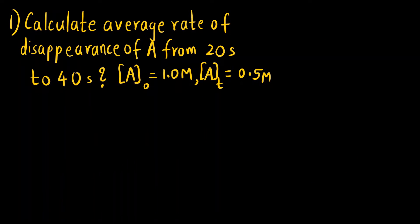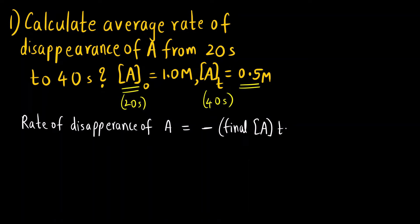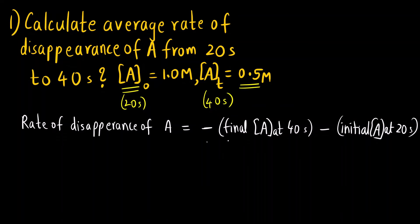Let us understand this with the help of a question: calculate the average rate of disappearance of A from 20 seconds to 40 seconds. The initial concentration of reactant A at 20 seconds is 1 molar, and the final concentration of reactant A at 40 seconds is given. The average rate of disappearance of A will be: minus of [final concentration of A at 40 seconds minus the initial concentration of A at 20 seconds] divided by change in time, that is t2 minus t1.